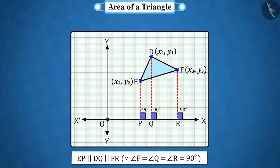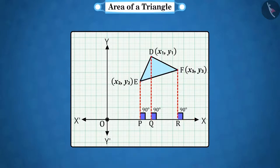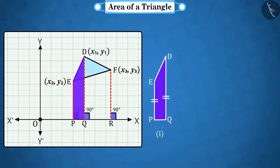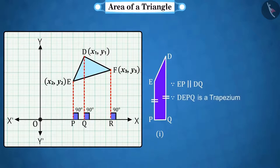And the angles EPR, DQR and FRx are equal to 90 degrees each. If we talk about DEPQ, then it is a trapezium. Because we know that if the opposite sides of a quadrilateral are parallel, then it is called a trapezium.